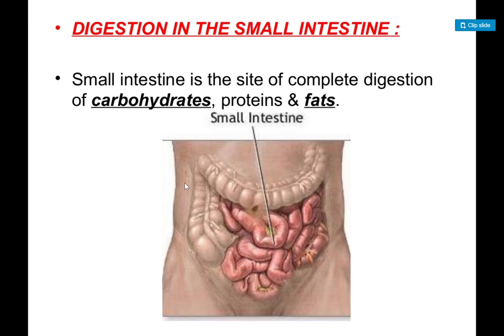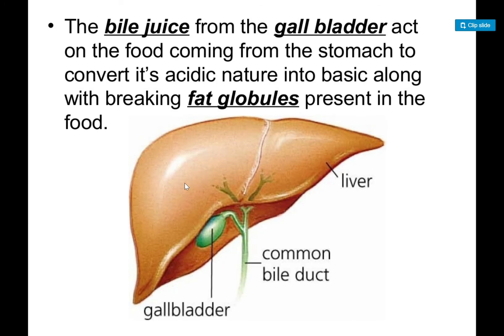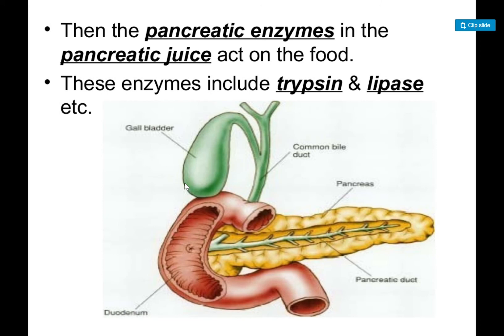When our food enters the small intestine, it encounters bile juice, which helps in digestion of fats. There is also another enzyme — our pancreatic enzymes. These include trypsin and lipase. Trypsin breaks down proteins, while lipase breaks down fat particles.